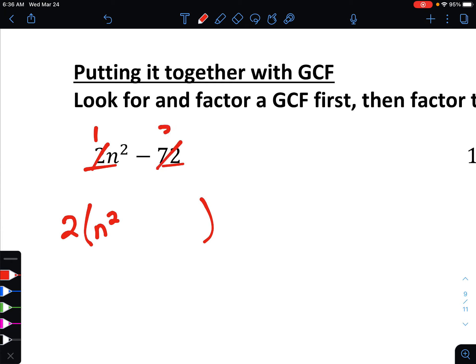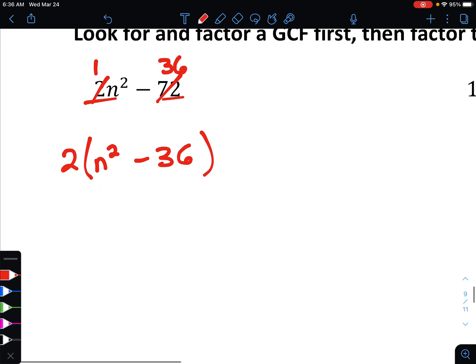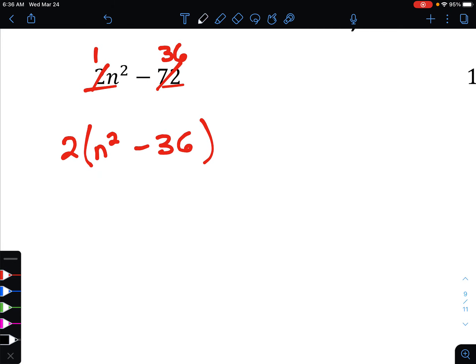And both 2 and 72 are divisible by 2. So let's start by factoring out a 2. All right, if we take 2 and divide by 2, that's just 1, so 1n squared. 72 divided by 2 is 36, so that's a minus 36.